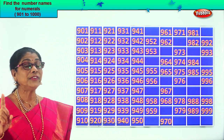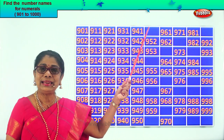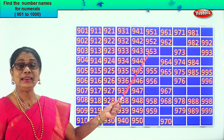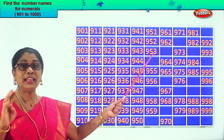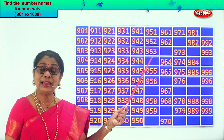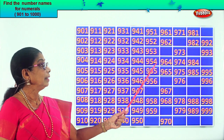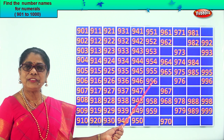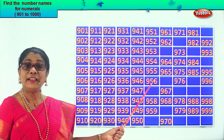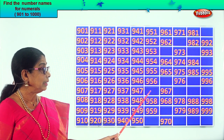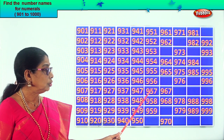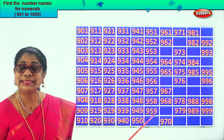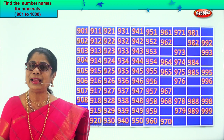After 50 comes 51, so the next missing number is 951, 952, 953. After 53, 54. So the next missing number is 954, 955, 956. After 56, what's the next number? 57. So the next missing number is 957. 958, 959. After 59, 60. So we get 960.